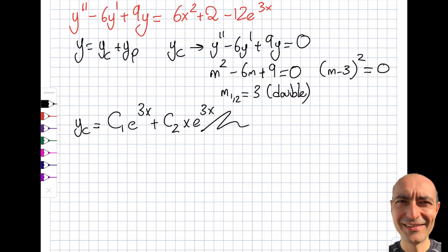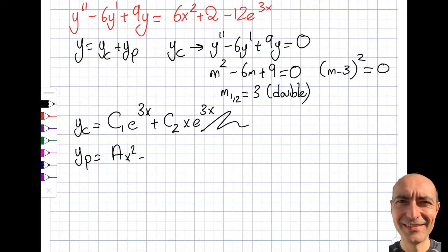That's the complementary solution. Now let's look at the form the particular solution should take. Using the superposition principle — since we have two distinct forms on the right-hand side — I write yp equal to (ax² + bx + c) plus d·e^(3x). I used superposition: one part for the polynomial and one part for the exponential.